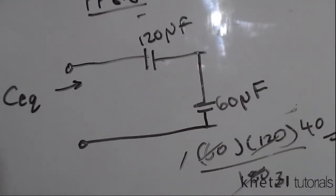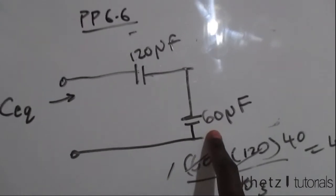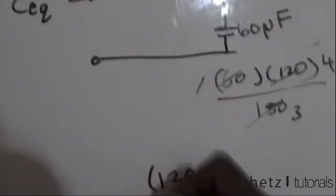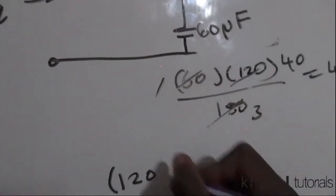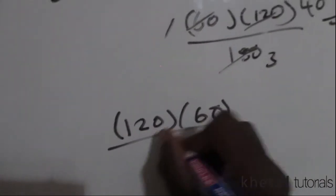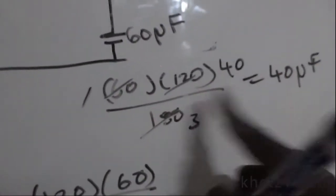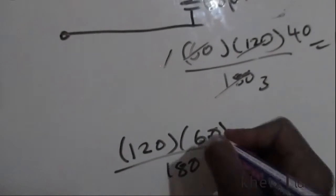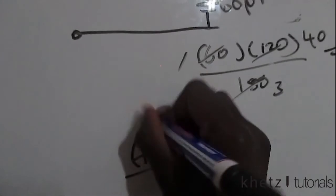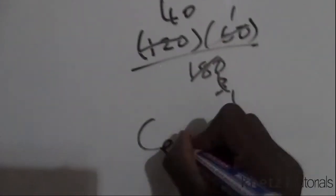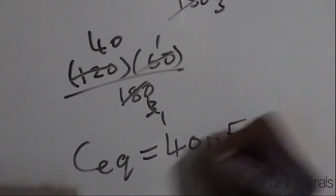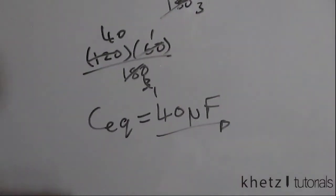And finally, we have 120 and 60 in series, which means we have to say 120 multiplied by 60 divided by 120 plus 60, which is 180, which is quite similar to what we did there. So just to recap, one, three, and three into that is 40, which means the equivalent capacitance is 40 microfarads. And that is how you solve this problem.